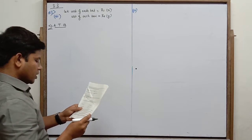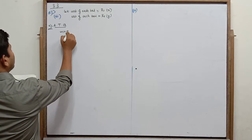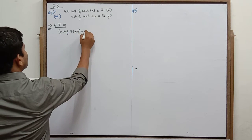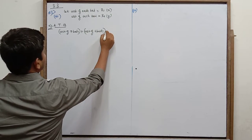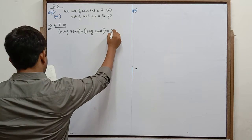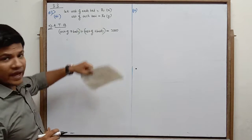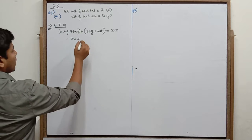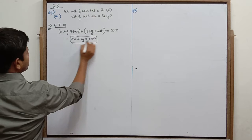According to the question, seven bats and six balls cost rupees 3800. So cost of seven bats — one bat costs x, so seven bats cost seven x. Cost of six balls is six y. Therefore seven x plus six y is equal to 3800. Call this equation 1.